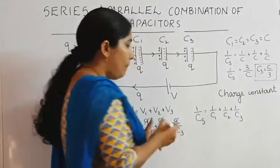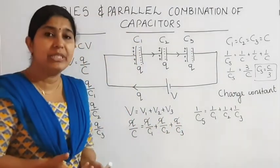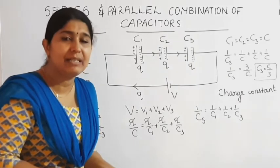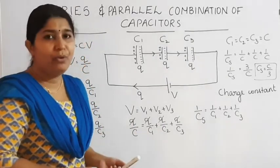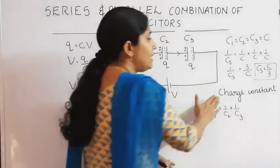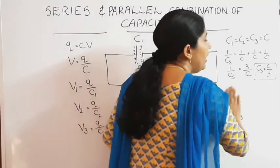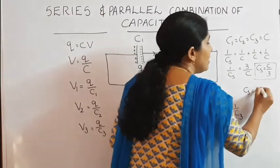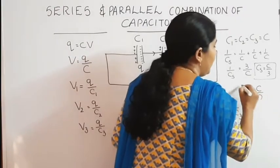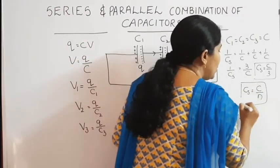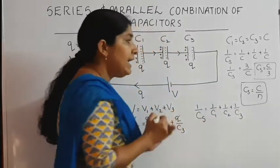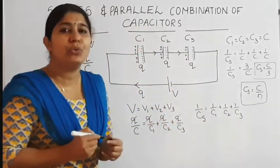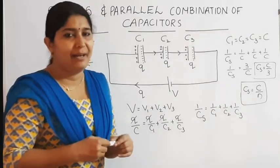If 4 equal capacitors are there, then Cs equals C by 4. If 5 equal capacitors, then C by 5. If N equal capacitors are there, then Cs is equal to C divided by N. This equation is also very important.